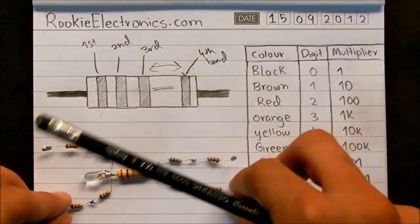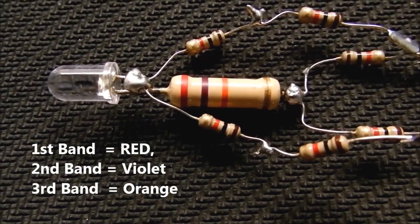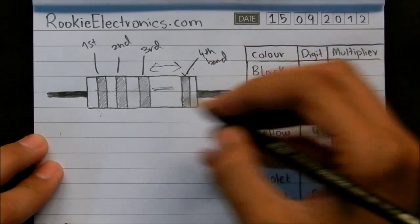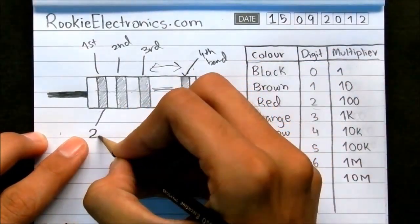We will just take an example of this rookie man's belly. The 1st band is red. Red has 2. We will write 2 here.